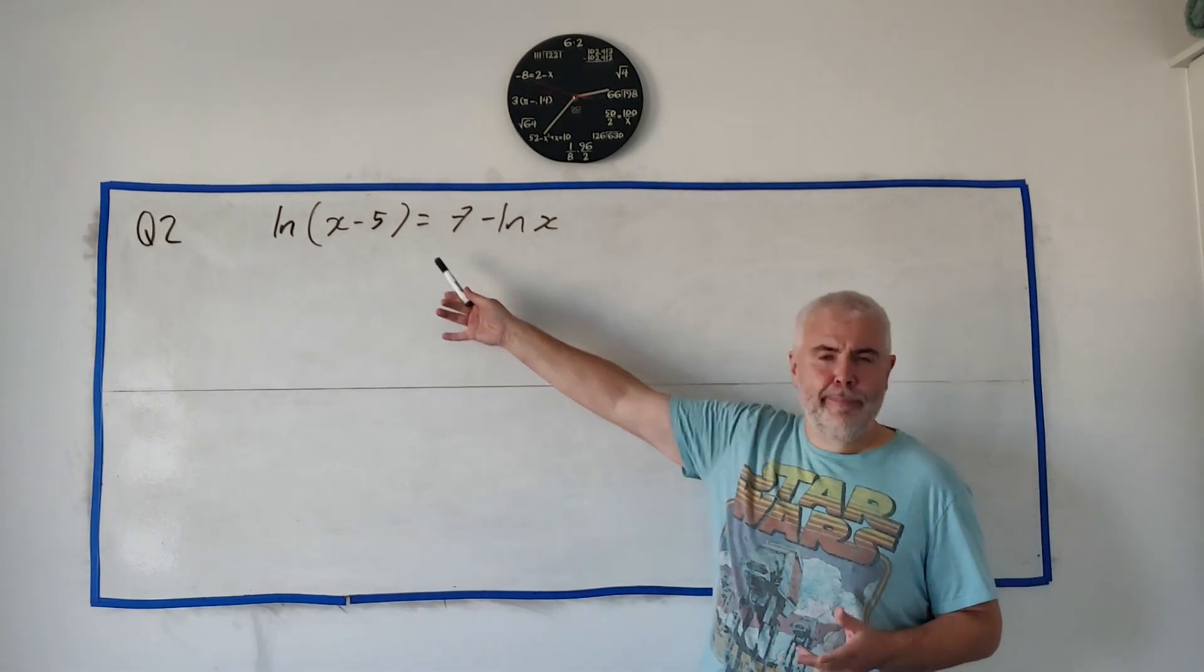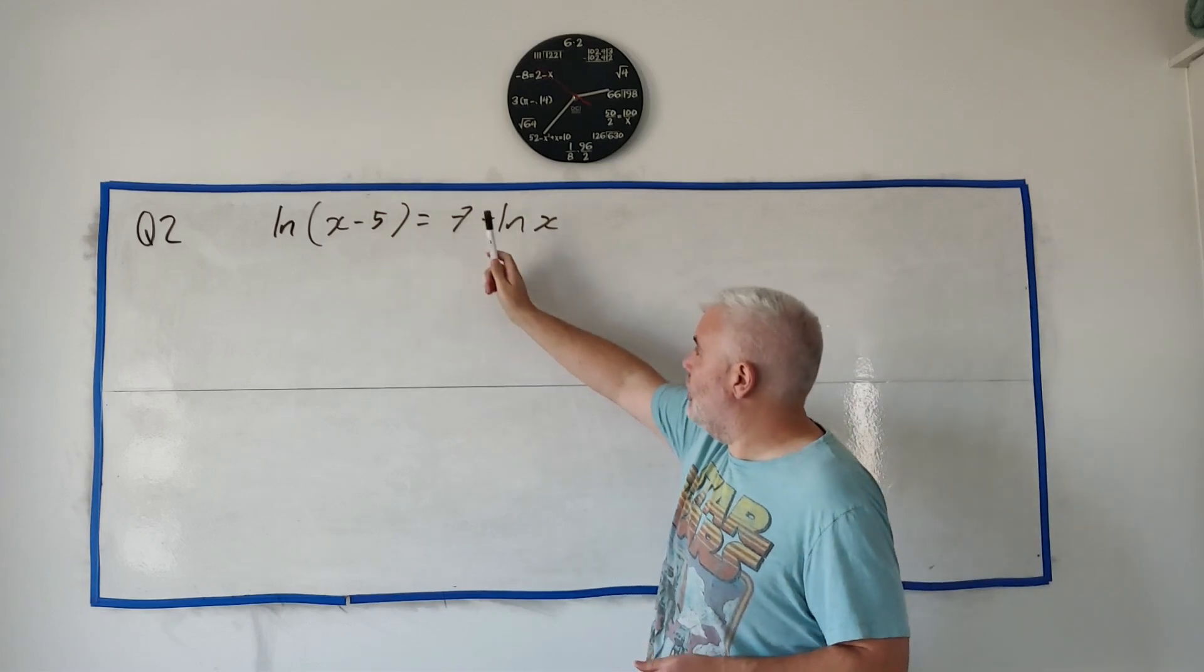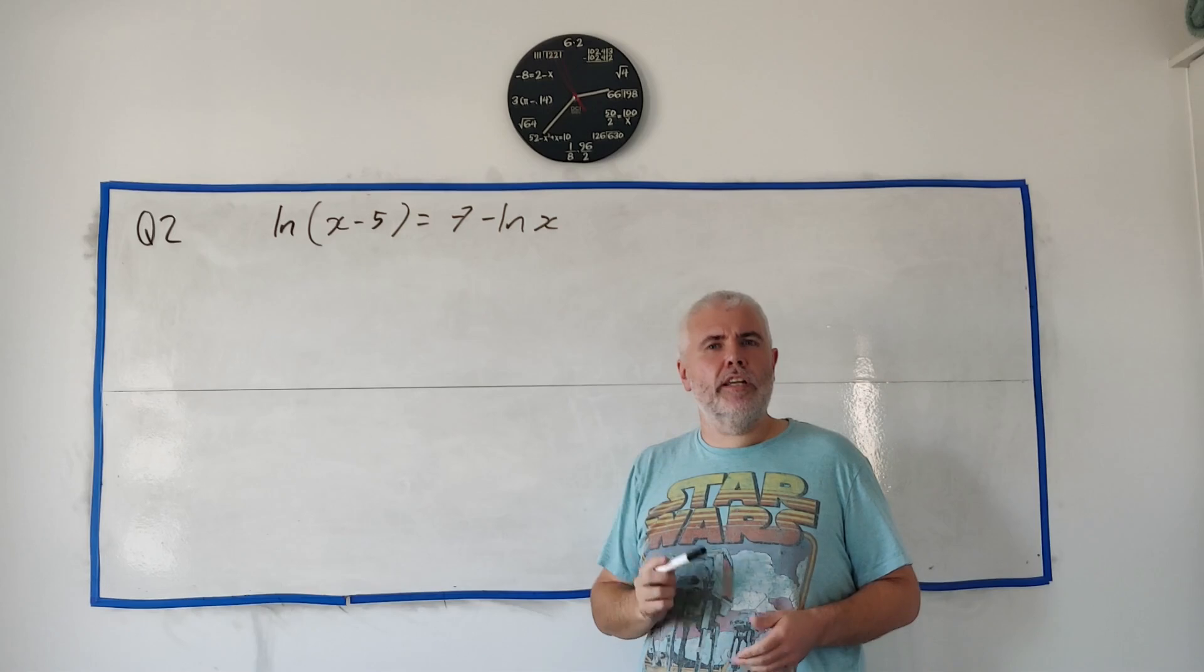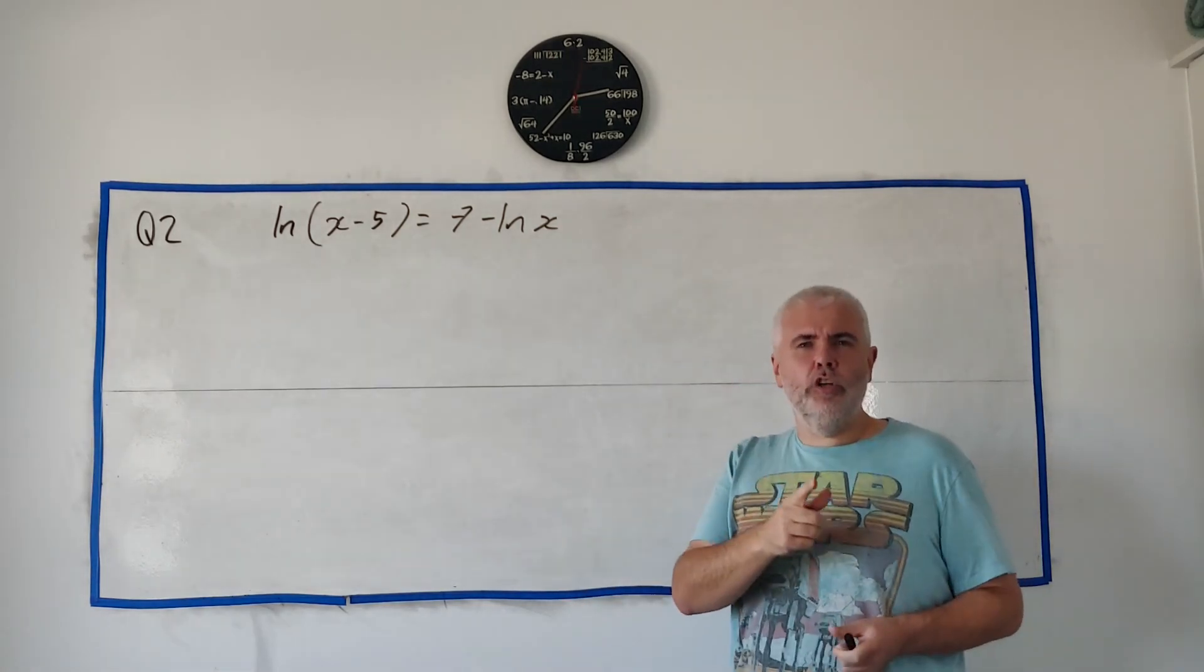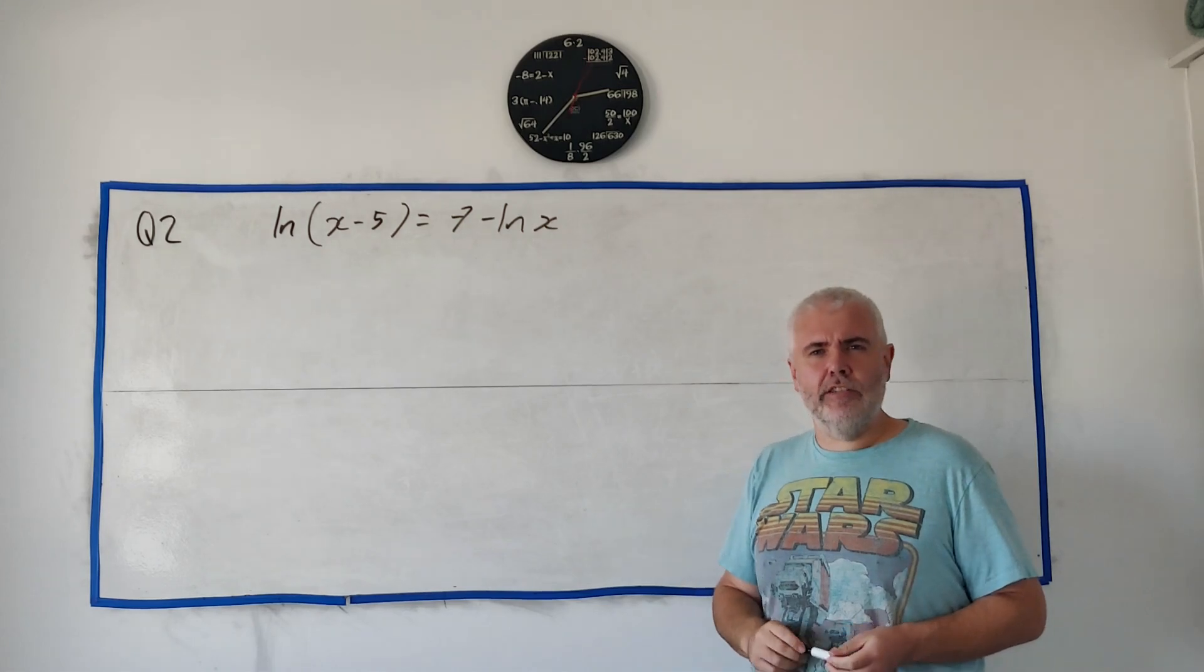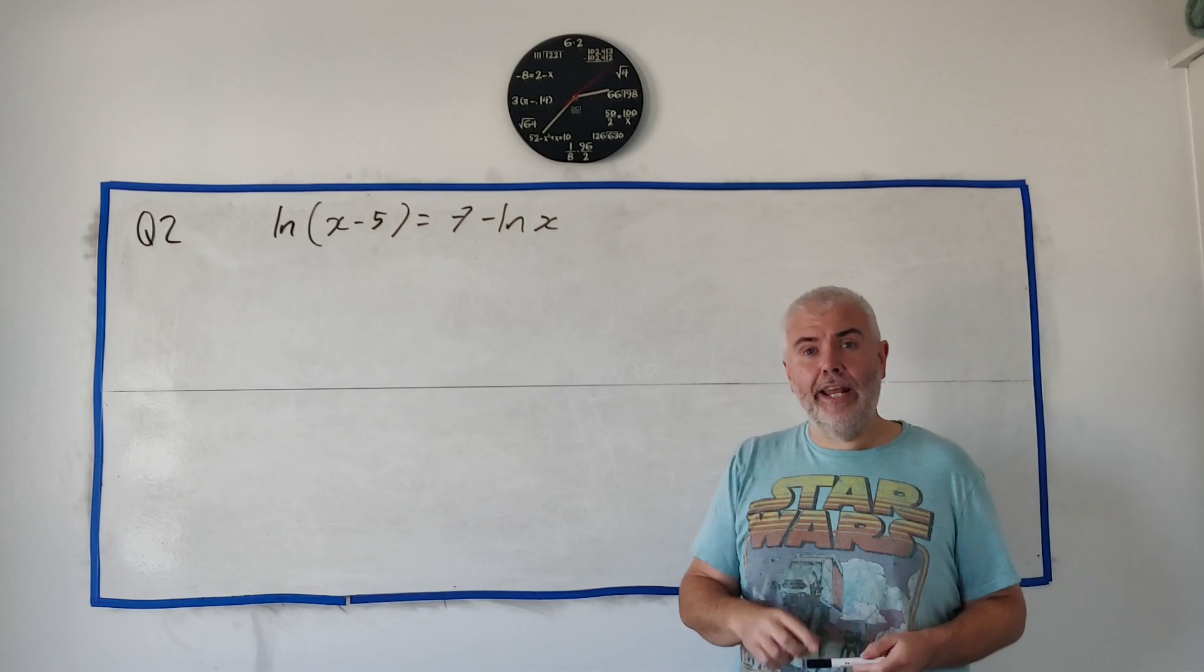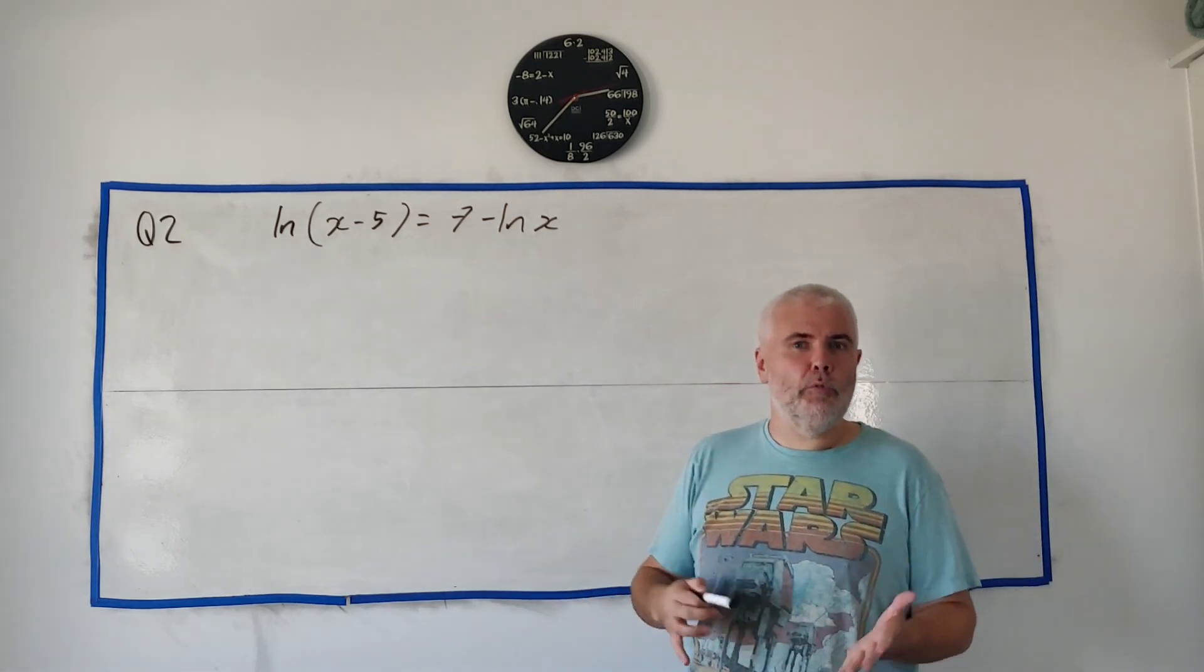Question 2 asks you simply to solve this equation here, natural log of x minus 5 is equal to 7 minus the natural log of x, and give your answer correct at two decimal places. There's a clue there of a little trick later in the question. They said give your answer, not your answers. So they only expect one answer to this question. We're going to find two, but I'm going to show you why one of them is wrong.